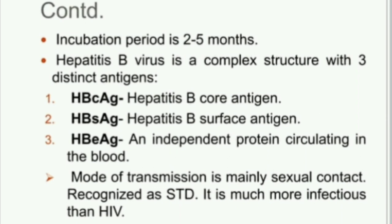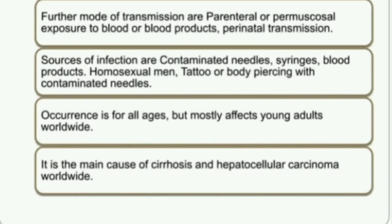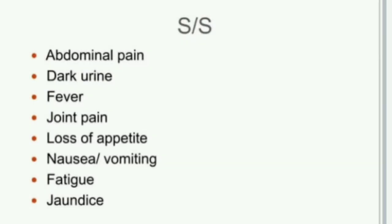The main mode of transmission is sexual contact. Further modes of transmission include perinatal or permucosal exposure to blood or blood products, prenatal transmission, and use of contaminated needles and syringes. Sources of infection include blood products, homosexual men, and persons with contaminated needles. It can occur at all ages.